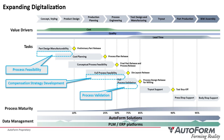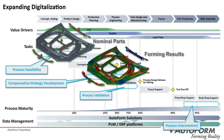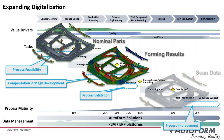Process validation is critical during process engineering to confirm your process is sound before committing to construction of tools or equipment. Process improvement allows for solving problems that can occur in production, creating virtual countermeasures quickly for less cost. Depending on your needs, you can utilize nominal CAD geometry or import forming simulation results or part scan data to capture effects of springback.